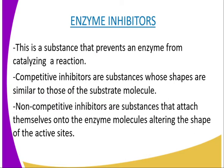That is, the rate of the catalyzed reaction is reduced. There are two types of inhibitors: competitive inhibitors and non-competitive inhibitors. Competitive inhibitors are substances whose shapes are similar to those of the substrate molecules. Thus, they compete with the substrate for the active sites of the enzyme. The substrate normally occupies the active sites of the enzymes, so once a competitive inhibitor gets into the active site of the enzyme, it will be very difficult for a substrate to get there because its space has already been occupied by the competitive inhibitor.